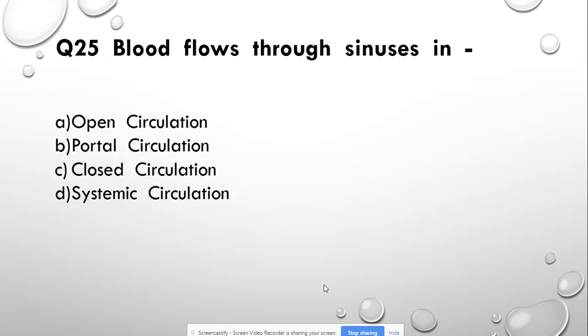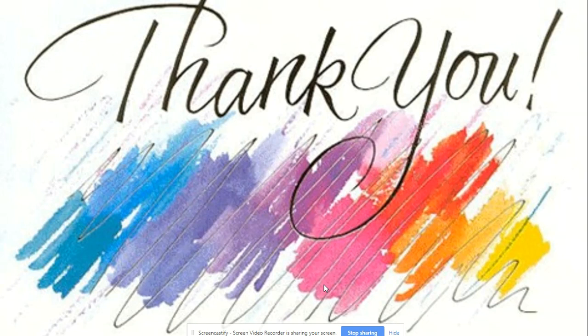Question number 25: Blood flows through sinuses in — open circulation, portal circulation, closed circulation, or systemic circulation. Answer: open circulation. That's it, I hope you liked it. Thank you.